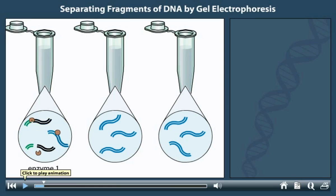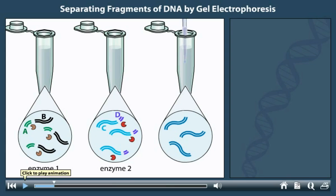Enzyme 1 cuts the DNA into fragments A and B, which we color for tracking purposes. Enzyme 2 cleaves the DNA at a different recognition sequence, yielding fragments C and D. Adding both enzymes yields fragments A, E, and D.